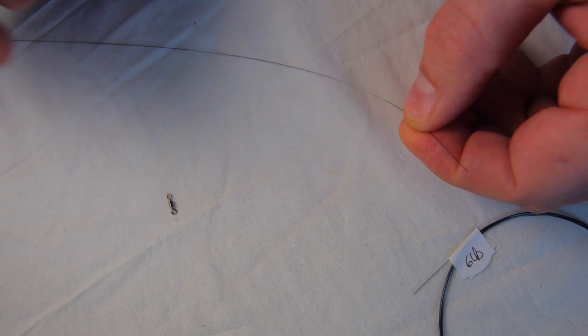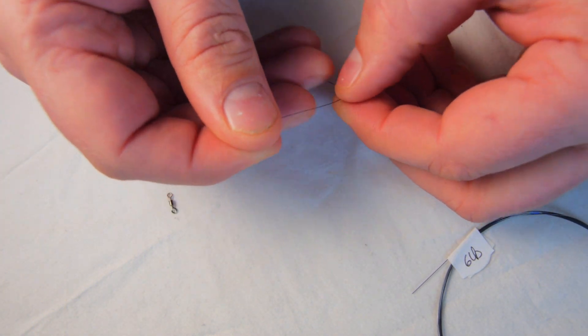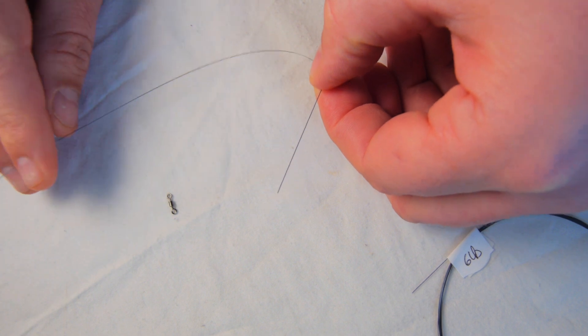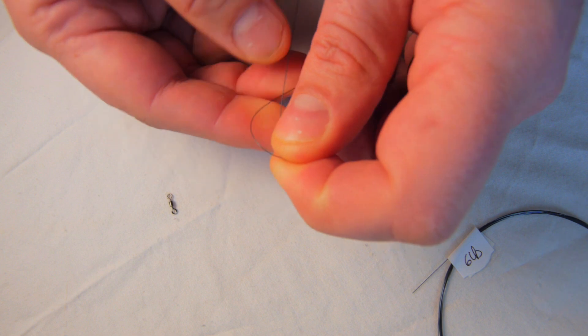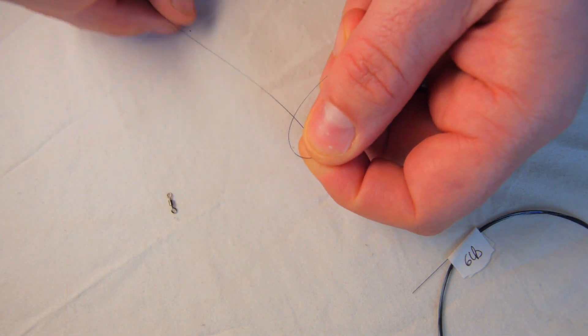The great thing is you can reuse it, but also you can tie it rather than crimping it. When you tie it I use a three to five turn blood knot.